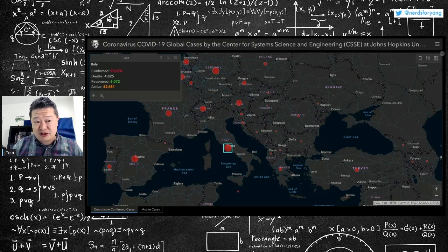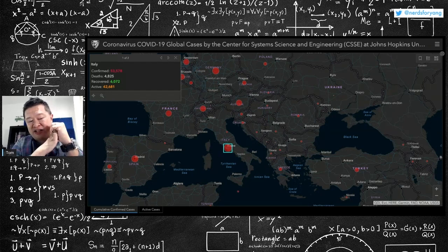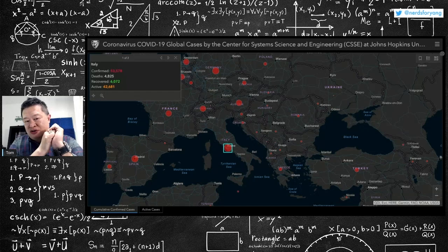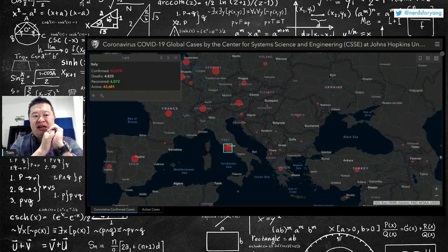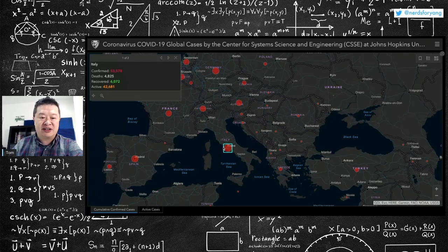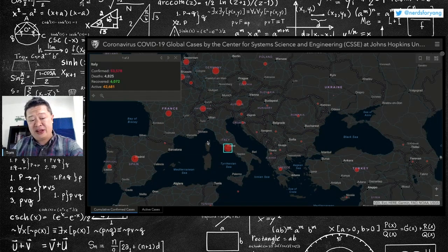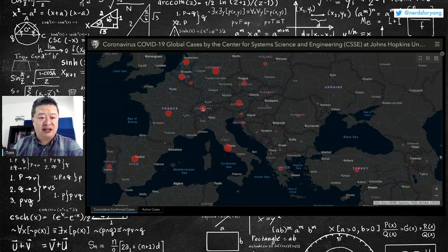Okay, so a couple things. One is you've got 53,000 confirmed cases and almost 5,000 deaths. So let's hope that they're not testing enough people, because if that were really the ratio, that would be a close to 10% fatality rate, which would not be good.